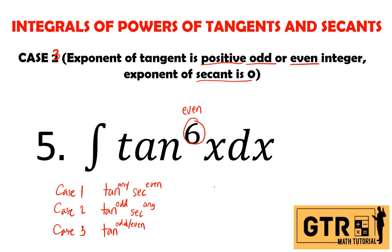What if the exponent of secant is an odd number? There is no case for this — if the exponent of secant is odd, we will use another technique: integration by parts, which we will discuss soon. So those are our three cases for powers of tangents and secants.